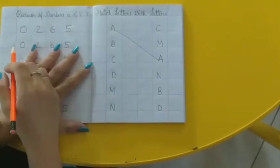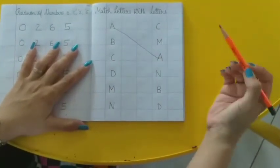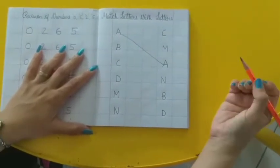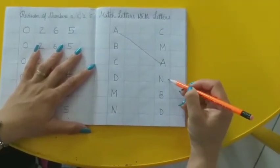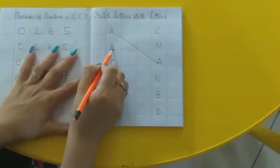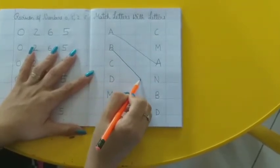Now this is B. Abhi B kithar hai, doonndo. Yeh B hai? No. This one? Yeh to M hai. Yeh? N. Yes, this is B. Toh B ko B ke saath hum match karenge.